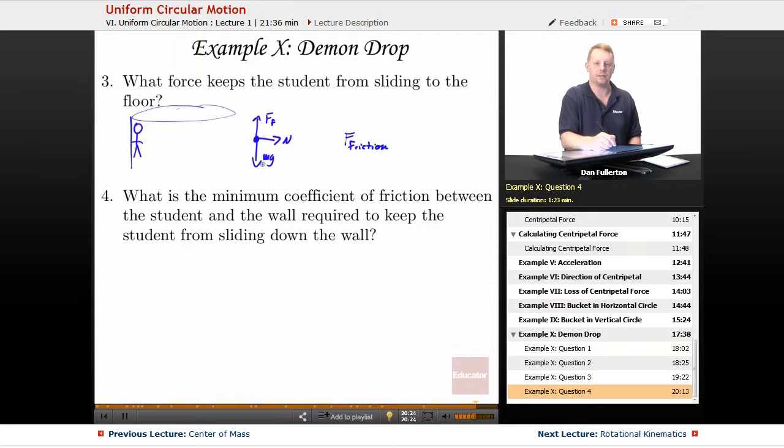force of friction and the weight of the student have to be balanced. So force of friction must equal the weight of the student. But we just said force of friction is mu times the normal force. So mu times the normal force must equal mg, which implies then that mu must equal mg over the normal force.